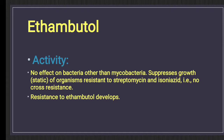Continuing with first-line anti-tuberculosis therapy, the next drug is ethambutol. Ethambutol has no effect on bacteria other than mycobacteria. It suppresses the growth of organisms resistant to streptomycin and isoniazid. Streptomycin is a second-line drug and isoniazid is a first-line drug, so no cross-resistance occurs because of its unique mechanism of action.